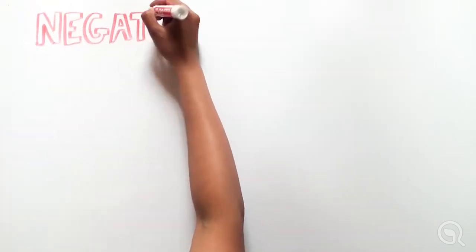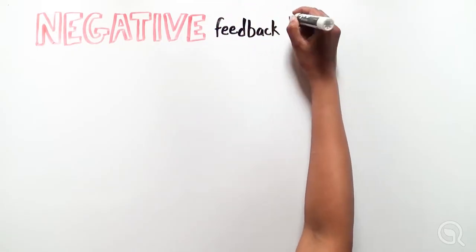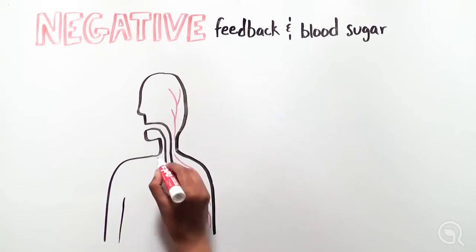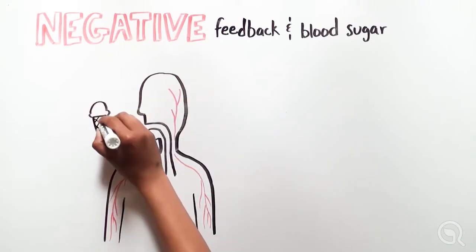What about negative feedback loops? Negative feedback keeps our bodily processes near the set point. One example is blood sugar maintenance. When we eat,